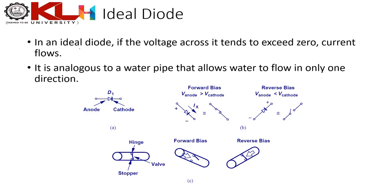In an ideal diode, if the voltage across it tends to exceed zero — meaning p is greater than n — current flows. Let's build an analogy using water and pipelines.